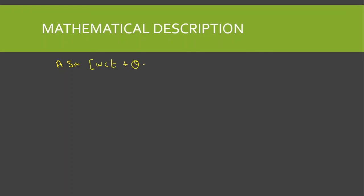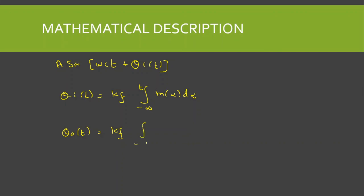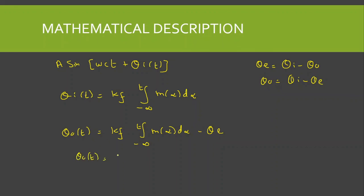When the incoming FM carrier is A·sin(ωct + θᵢ(t)), the instantaneous phase θᵢ(t) = Kf·∫₋∞ᵗ M(α) dα, since this is an FM modulated signal. This means θ₀ = Kf·∫₋∞ᵗ M(α) dα − θₑ. Now if we have small phase error — that is, the PLL is in phase lock — then the error term θₑ can be neglected, so θ₀ ≈ Kf·∫₋∞ᵗ M(α) dα.